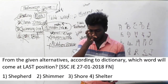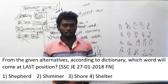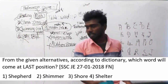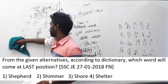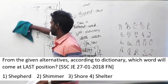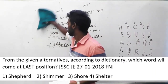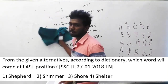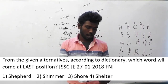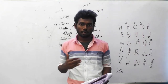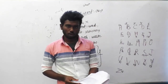Question number 144. From the given alternatives, according to the dictionary, which word will come at last position? You cannot answer dictionary questions blindly — look carefully whether they ask for second, first, or last position. In this question, they ask for the last position. Check these words, make an order, and find which comes last. The answer is option 3, sure.